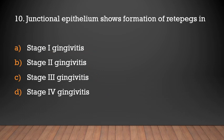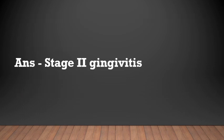Junction epithelium shows formation of rete pegs in which stage of gingivitis? Stage 1, Stage 2, Stage 3, or Stage 4? The answer is Stage 2 gingivitis, which is known as early lesion.